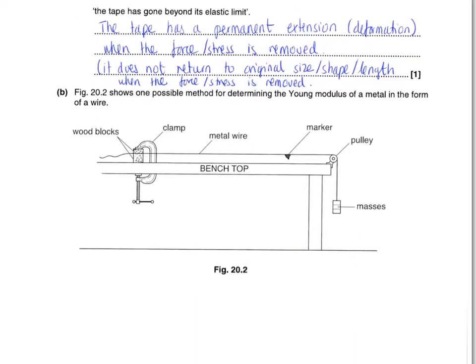Part B, then, we move on to a possible method for determining the Young's modulus of metal in the form of a wire. And so we've got the wire clamped at one end. We've got a marker. Obviously, the wire we're actually experimenting on is the wire between the clamped wooden blocks, the clamps, and the marker. The wire there is really, its only function is to attach the masses. If we're measuring where the marker is, that's going to be the extension we're going to look at.